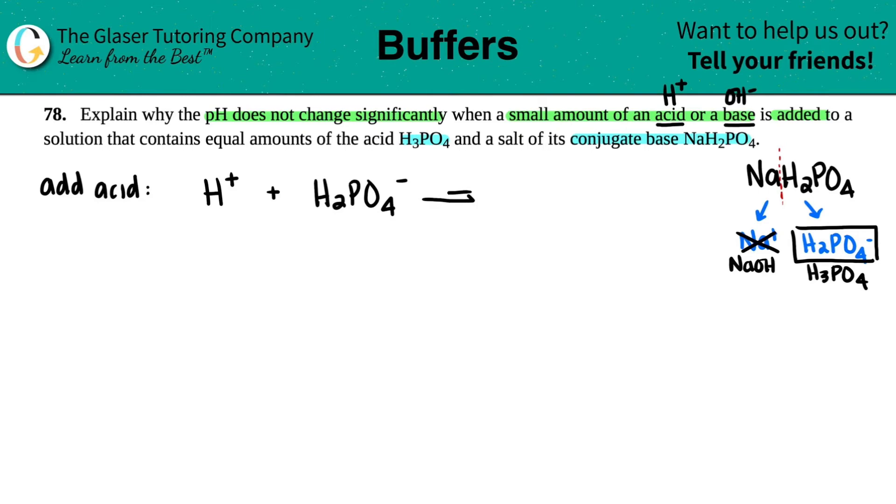And since they're weak, we do equilibrium. And remember, if you have an H+, and you have a base, they're just going to hook up with each other, right? And you're going to get the conjugate acid, H3PO4. Okay, now that's the equation for the antacid.